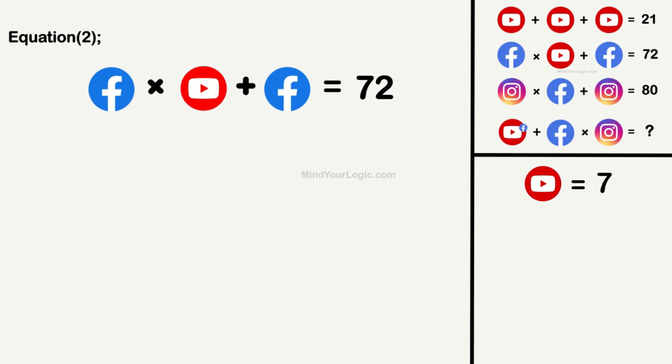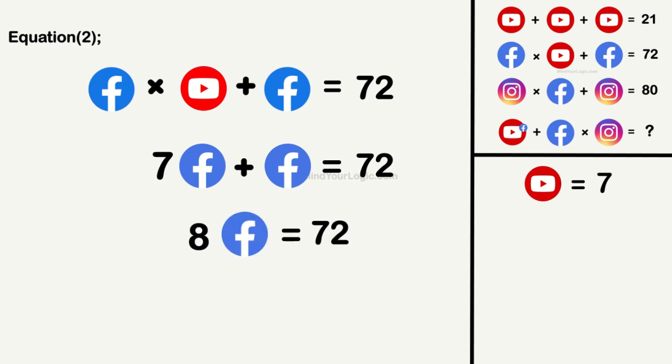Equation 2 represents Facebook multiply YouTube plus Facebook equals 72. On substituting value of YouTube, we get Facebook equals 9.